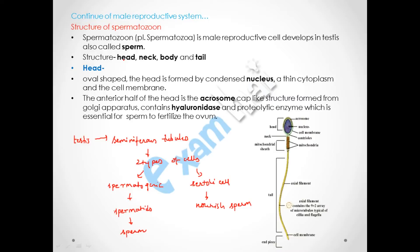Now we are going to discuss the structure of the sperm. The structure includes four parts: the head, neck, body, and tail. As you can see in this diagram, the head is oval-shaped.